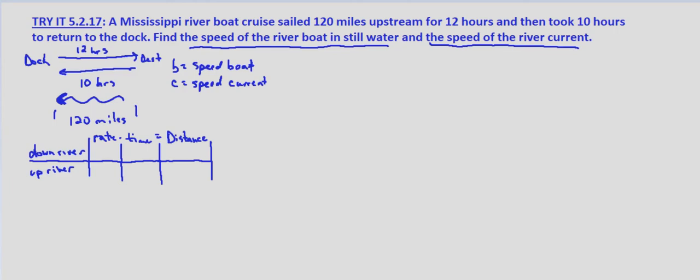We're asked to find the speed of the riverboat in still water and the speed of the river current. So I drew this little diagram where we have a dock, the boat traveled 12 hours upstream against the current to some destination and then traveled 10 hours back. Here's the direction of the current just for clarification. We know that the distance is 120 miles in both directions.